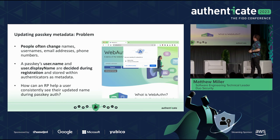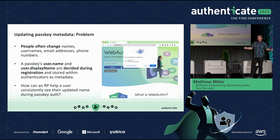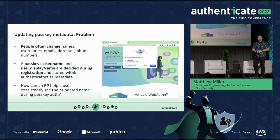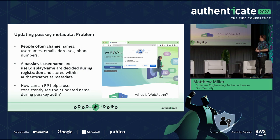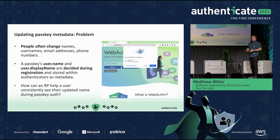The next problem is updating passkey metadata. A non-obvious detail about using passkeys is that during registration, the relying party specifies a username and a display name — things like an email address, phone number, or first and last name. That metadata is what the browser shows the user at authentication time so they know what account they're signing into. Now, if a user misspells their name during registration, fixing that is trickier than you might think. Once that username and display name metadata are given to an authenticator and stored during registration, the RP doesn't really have a good way to feed updated values back to the authenticator.